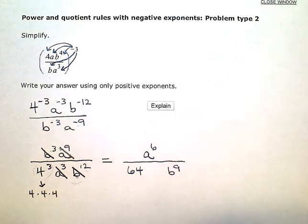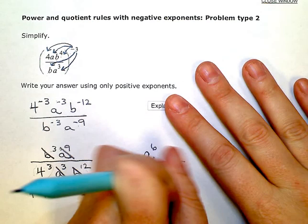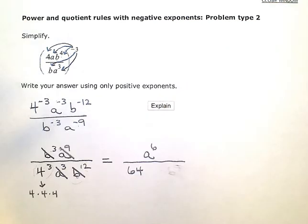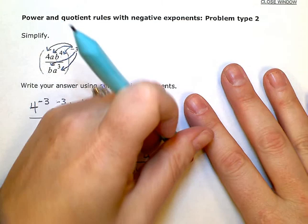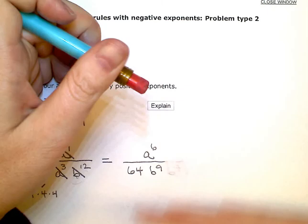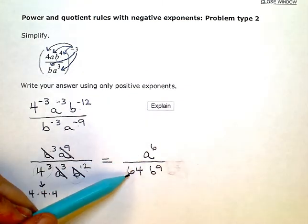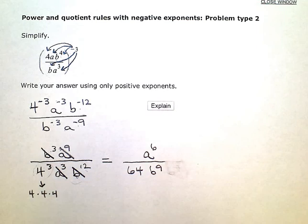So, final answer, I'm going to move this over a little bit. It is going to be a to the sixth in the numerator and sixty-four b to the ninth in the denominator.